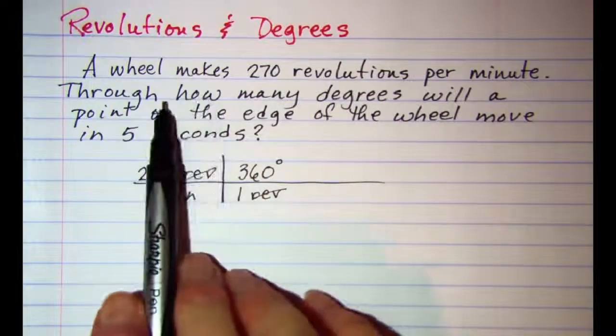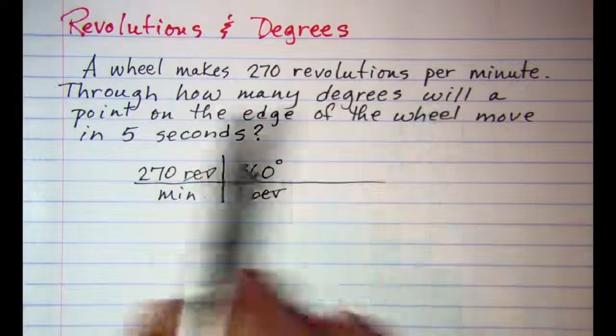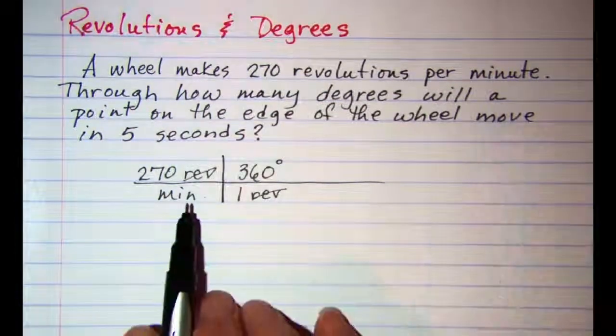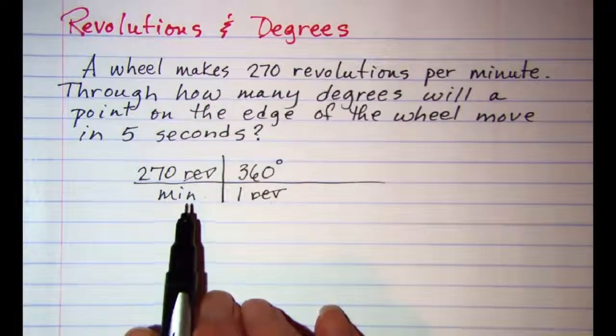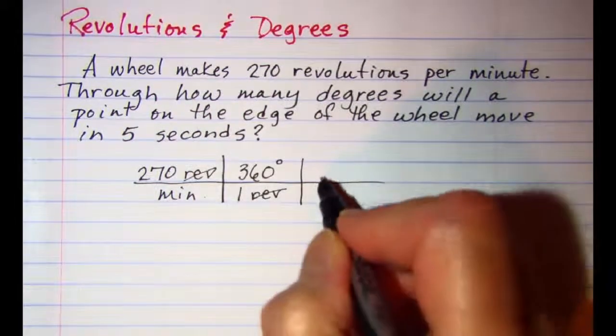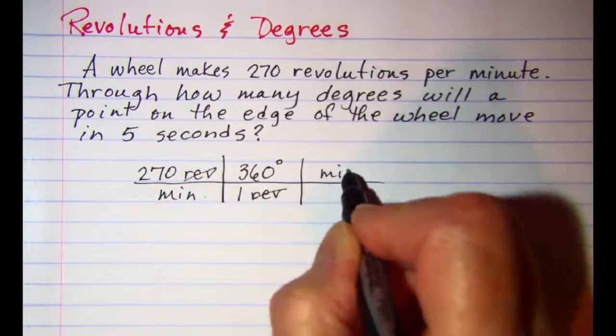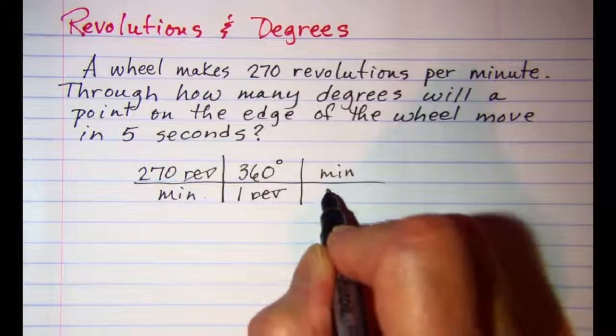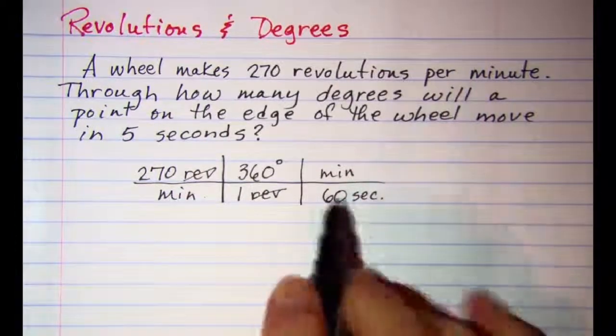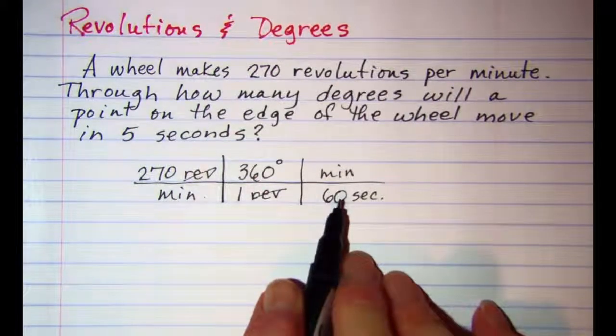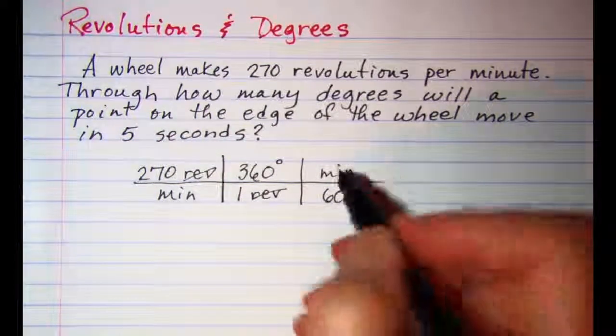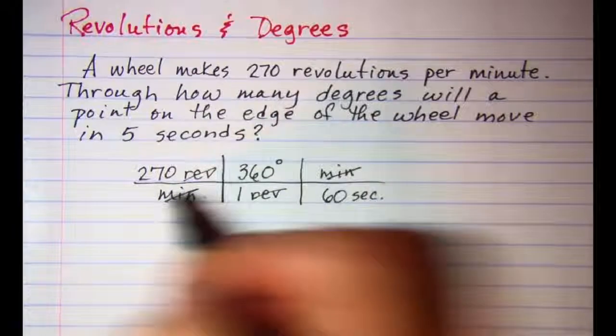I also want to know how many degrees will a point on the edge of the wheel move in 5 seconds. So I want to change from minutes to seconds. I'll also use 1 minute is the same as 60 seconds. This also is a unit multiplier because these are equal, and I can now cancel off my minutes.